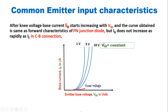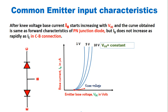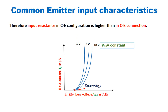However, the base current IB does not increase as rapidly as emitter current in the case of common base connection. Due to this, the input resistance in common emitter configuration is higher than the input resistance in the case of common base connection.